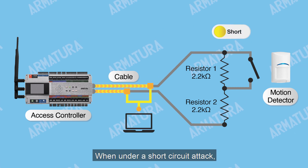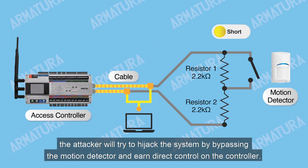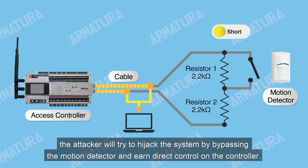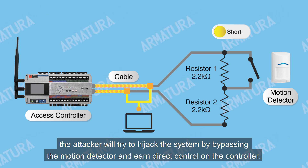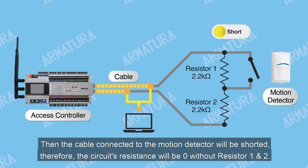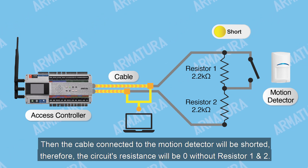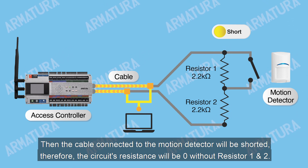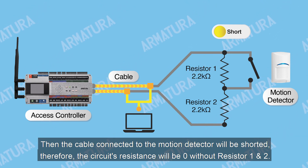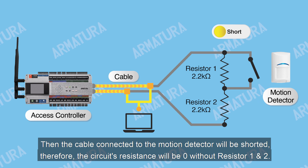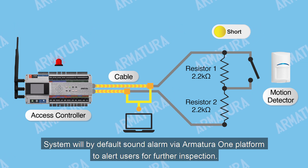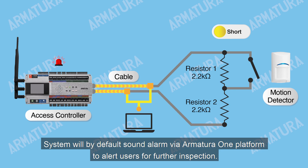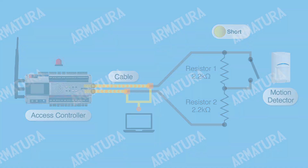When under a short-circuit attack, the attacker will try to hijack the system by bypassing the motion detector and gain direct control on the controller. The cable connected to the motion detector will be shorted, so the circuit's resistance will be zero without resistor 1 and 2. The system will by default sound an alarm via the Armatura 1 platform to alert users for further inspection.